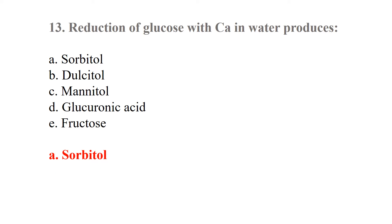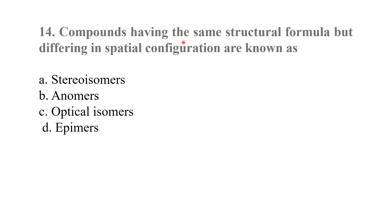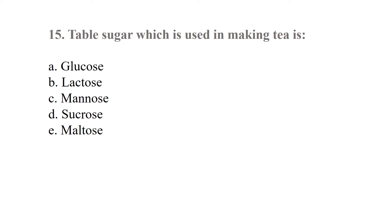Compounds having the same structural formula but differing in spatial configuration are known as stereoisomers. Table sugar, which is used in making tea, is called sucrose.